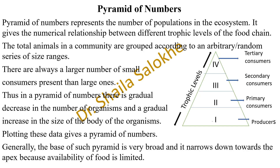The total animals in a community are grouped according to an arbitrary series of size ranges. There are always a large number of small consumers present than large ones. For example, many insects feed on grass — insects being small consumers — and there are fewer frogs and other animals which represent the large consumers.